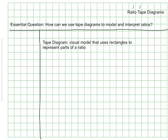Before we look at some tape diagrams, we want to make sure we know what a tape diagram is. A tape diagram is a visual model that uses rectangles to represent the parts of a ratio. Either the part-to-part or the part-to-whole relationship can be represented using tape diagrams. They require a bit of attention to detail as you set them up, otherwise they aren't particularly useful, so you want to make sure that you're careful as you're setting these up.